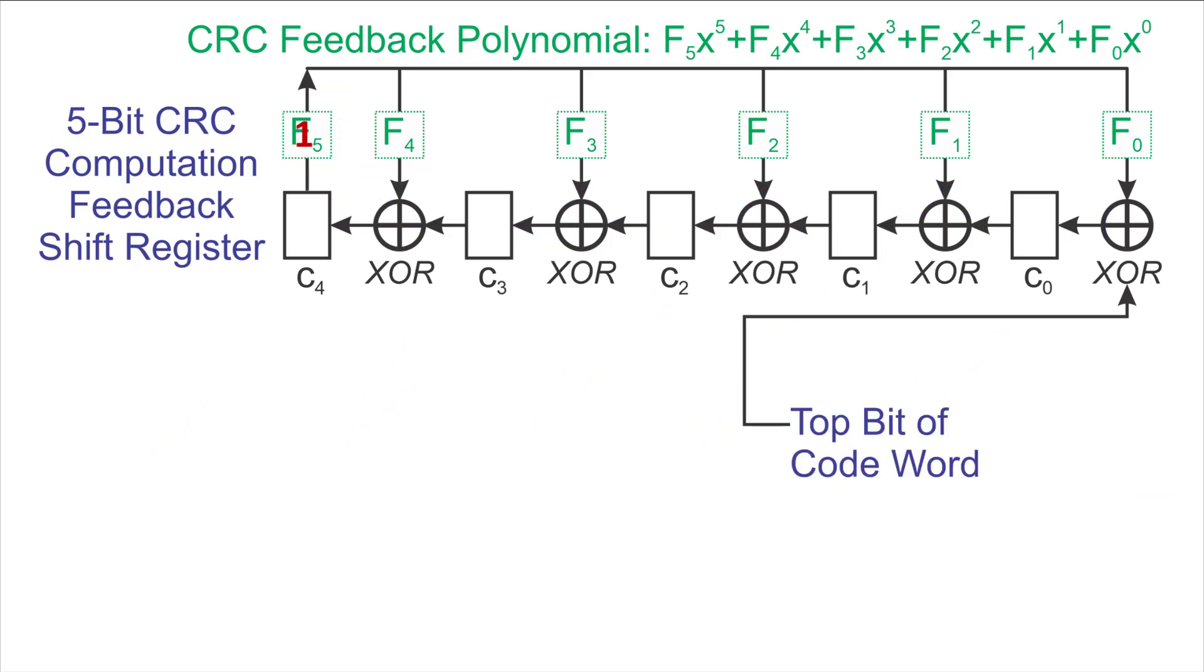In hardware, there's a thing called a clock pulse, which takes all the inputs and puts them into the register simultaneously. The way this circuit works is that all the outputs from c0 through c4 plus the top bit of the codeword show up and go through the XOR gates. The output of the XOR is waiting at each one of the c bit inputs, and the clock pulse takes the inputs and puts them inside the register.